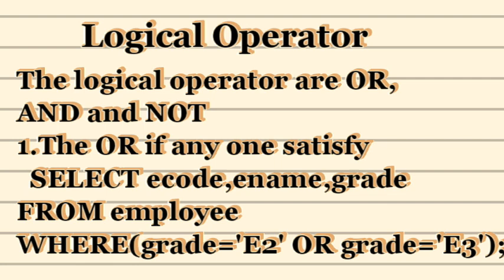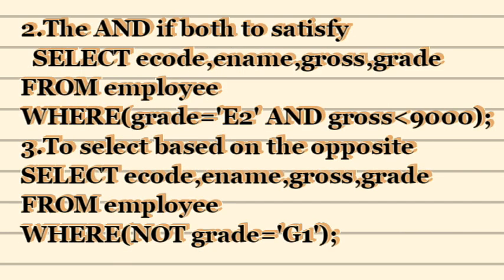For example: SELECT ecode, ename, grade FROM employee — this is the employee table from which we fetch data — WHERE grade equals 'E2' OR grade equals 'E3'. This means either the grade is E2 or the grade is E3; it will show both. If there is no E3, only E2 will be printed, and vice versa. The OR condition is used when we want to satisfy any one condition.